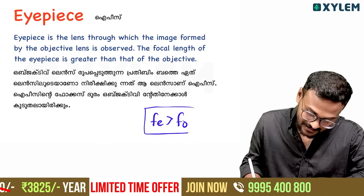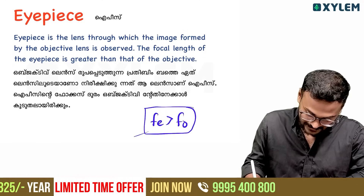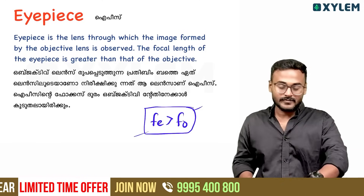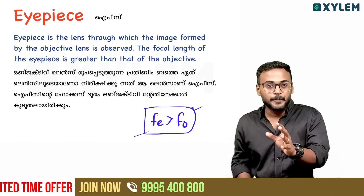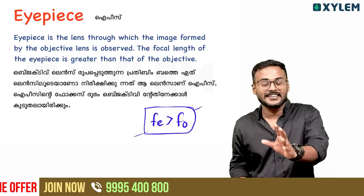The objective lens has a focal length — objective focal length. The eyepiece also has a focal length.